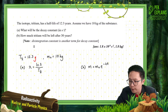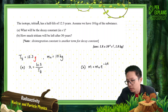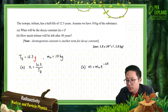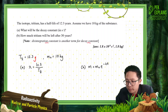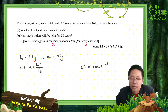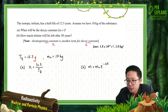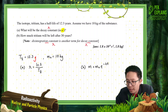The integration constant is another term for the decay constant. Both refer to lambda. So part (a) asks for lambda, but the unit required is per second.